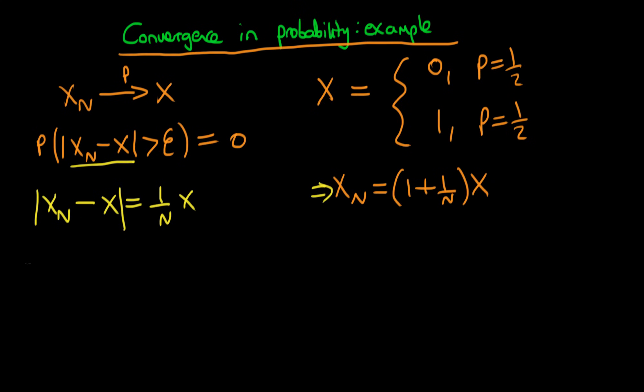Now we need to think about each of the separate cases. So with probability equal to a half, we have that X is equal to zero. In this particular circumstance, we have that Xn minus X is equal to one over n times X. Well, X is just zero, so we have that this is equal to zero.